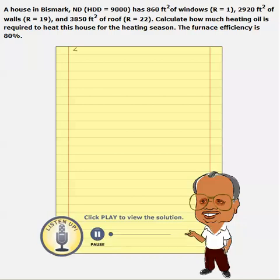Problem 4.7 is very similar to what we have done in 4.6, which is calculating the heat loss from various surfaces and adding up all those to get the total heat loss from the house, and to calculate the oil requirement based on the furnace efficiency.